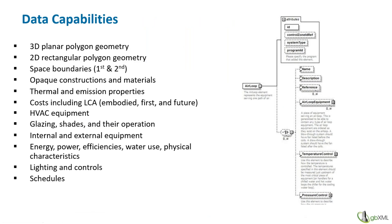GBXML has over 500 elements, attributes, and enumerations that describe all aspects of a building for purposes of analysis. What you can see on screen is just a subset of those elements, including planar geometry, rectangular polygon geometry, constructions, materials, thermal and emission properties, and so on. The real power behind GBXML are its geometric elements, allowing tools to draw a schematic or analytical view of the building for importing into analysis tools and for viewing on web-based and desktop tools.